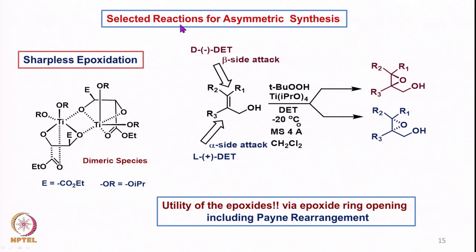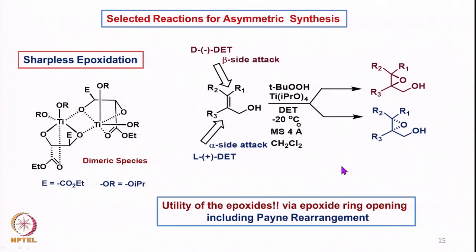Then we went to asymmetric synthesis, where initially we discussed Sharpless epoxidation, where allylic alcohols can be converted into epoxy alcohols with different kinds of enantioselective products. We also saw the utility of these epoxides — that is, epoxide opening in a very regioselective and stereoselective fashion, including the Payne rearrangement. Under neutral and under basic conditions, we saw different reactions.